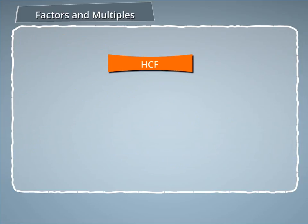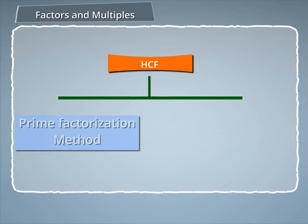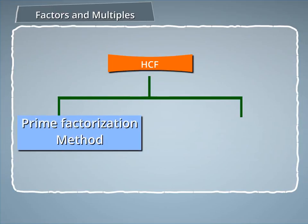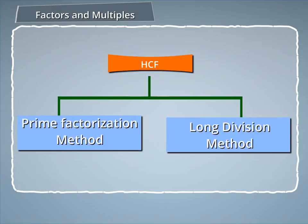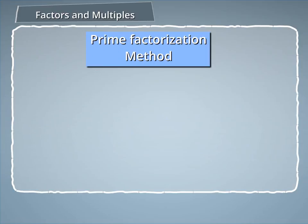HCF can be calculated using two methods: the Prime Factorization Method and the Long Division Method. Let us first understand the Prime Factorization Method.